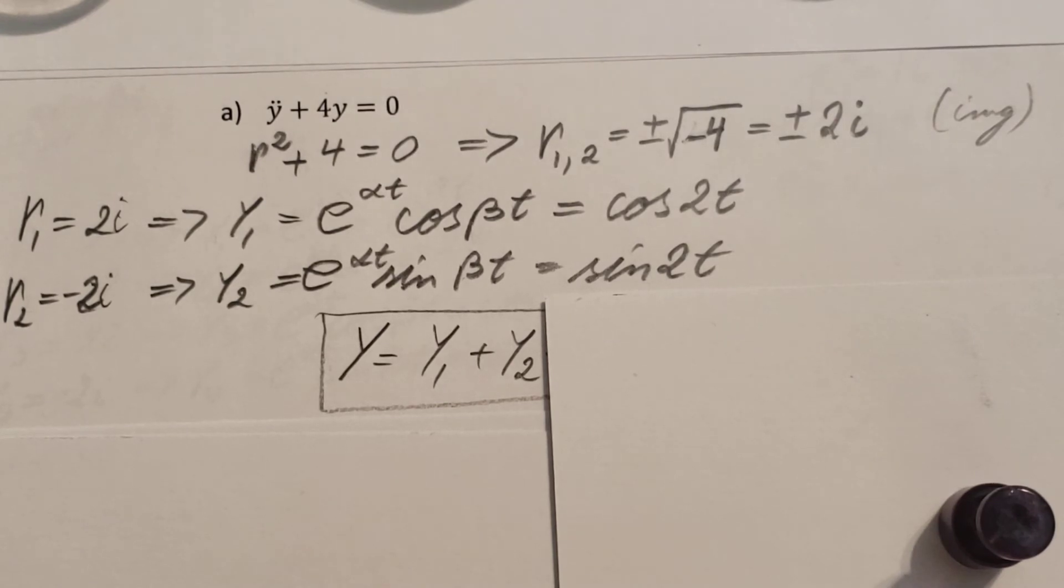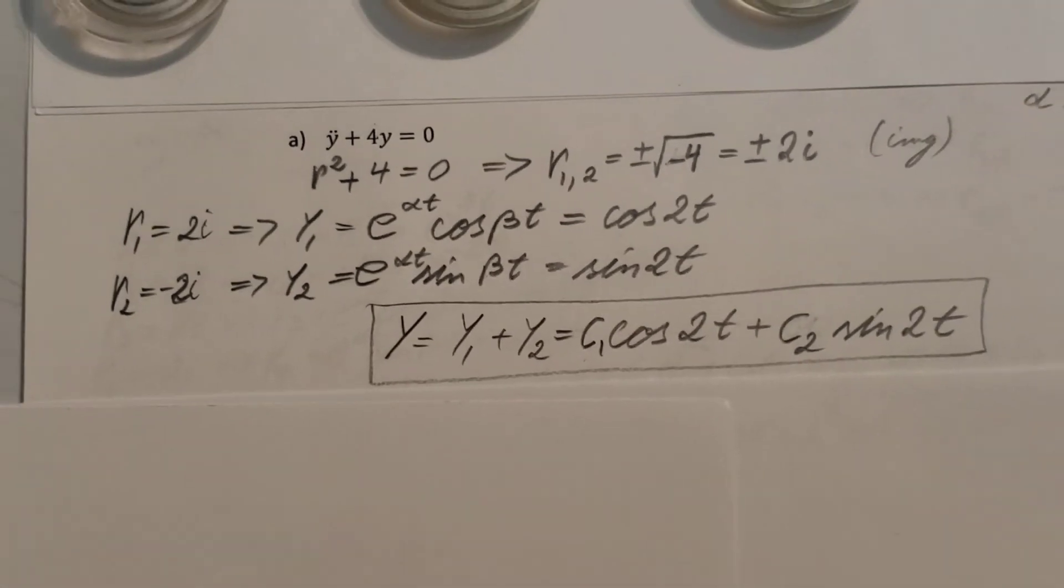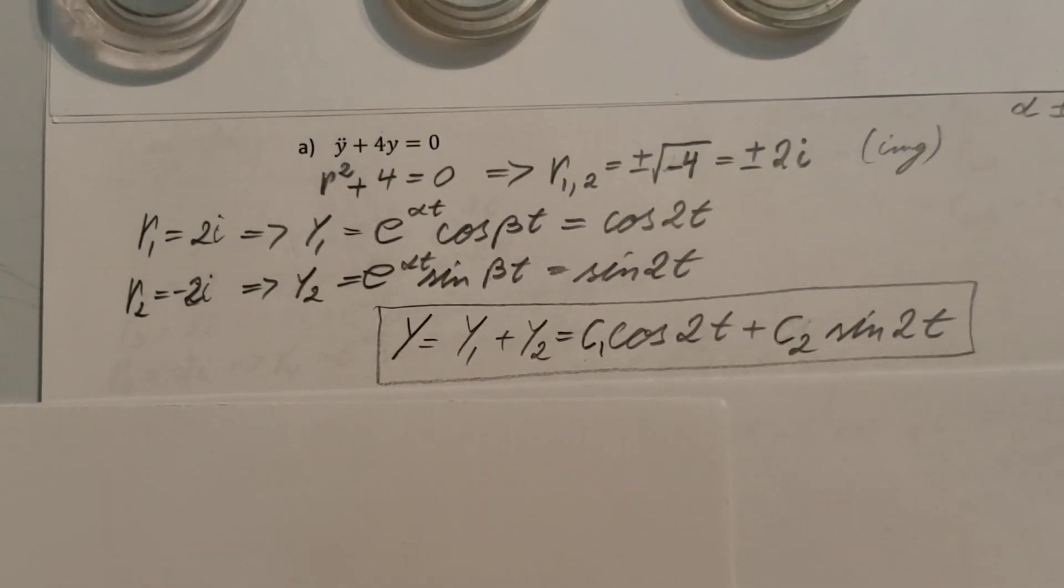So to get our solution, all we have to do, y equals y1 plus y2. Simply plug it in, and make sure you put the constant in front of it. So c1 times cosine 2t plus c2 times sine 2t. And that's it. Pretty short.